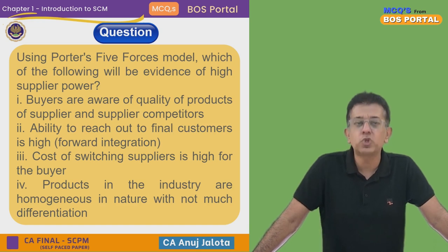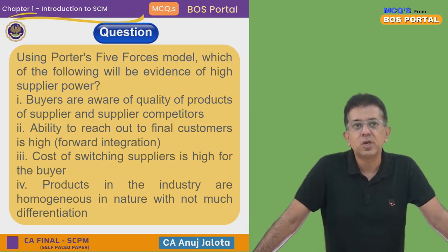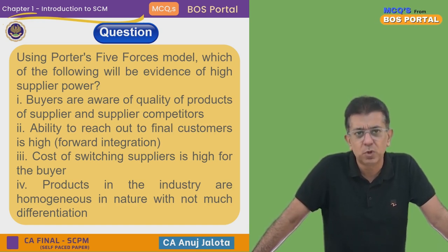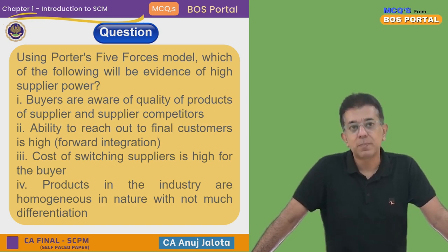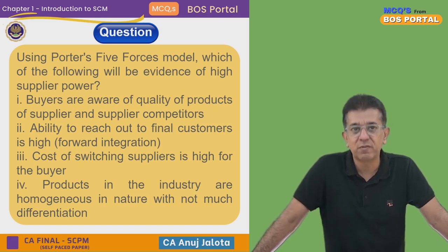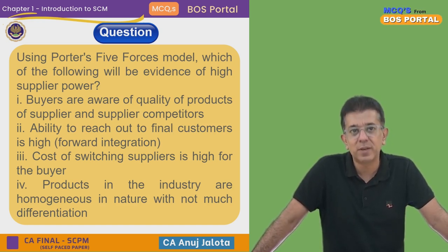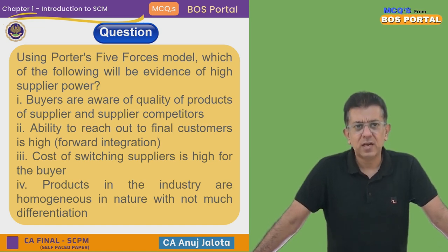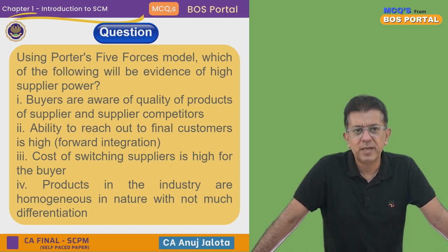This is the chapter Introduction to SCM. The question for today is: using Porter's Five Forces model, which of the following will be evidence of high supplier power? Option one: buyers are aware of the quality of the products of suppliers and suppliers' competitors.